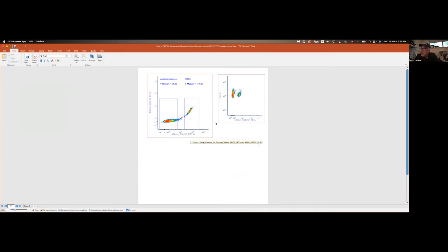We're now in the FCS Express software. We see the same data we've seen in our PowerPoint presentation. I drew gates around the negative fraction and the positive fraction. We're looking at the median on the y-axis for each population. At the end of the compensation, the value of that median for the negative population should be equal to the median of the FITC positive fraction. We're using the median because it's much better in flow to use median over mean. It's less sensitive to outliers.